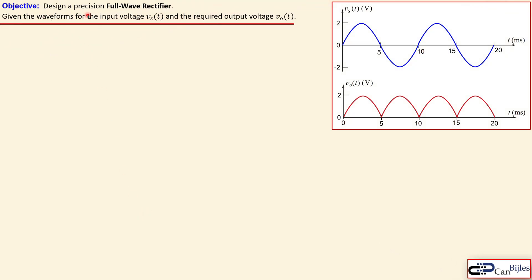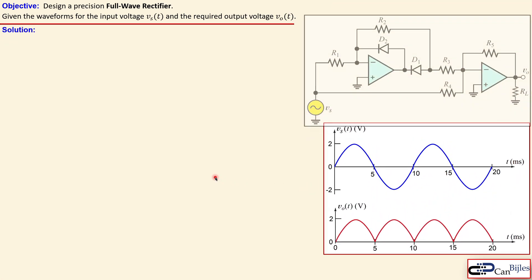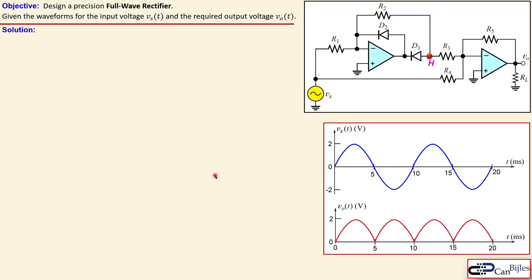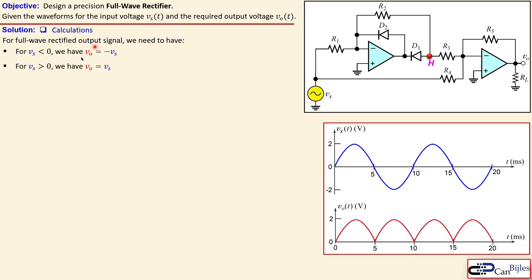Let's now go to the design example itself. We have a precision full wave rectifier circuit as the objective. The given waveform for the input is a blue line at 2 V peak and 100 Hz frequency, and the rectified output required is exactly the absolute value of VS. The two conditions we need are: R5 over R4 equals 1, and the ratio involving R3 must equal 2.